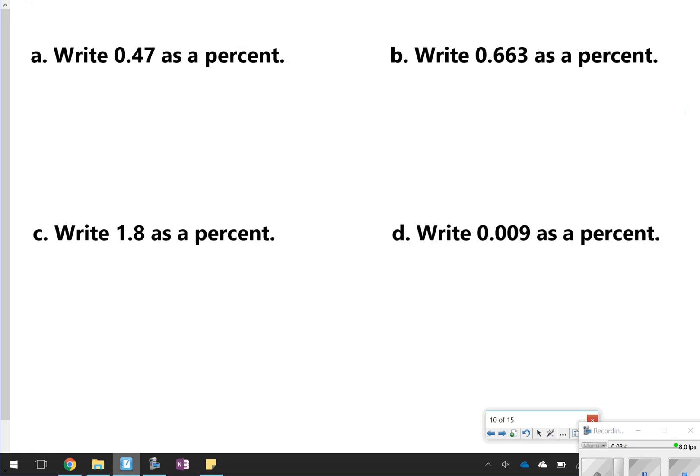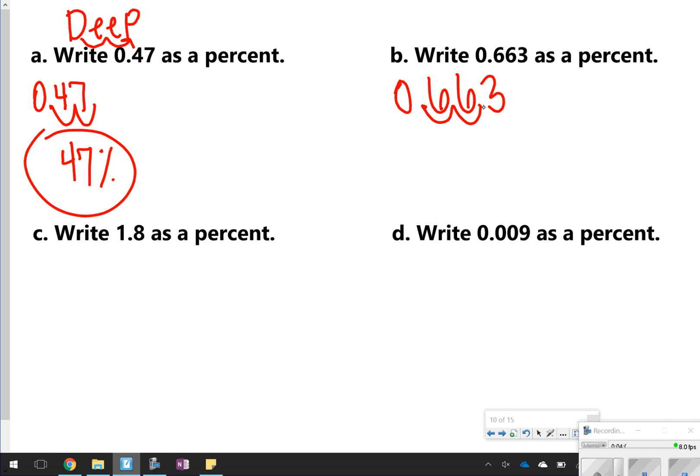So I'm going to try these for us and then you're going to try some. So we have 0.47. Remember to write decimals as percents, you can use the word DeeP or the alphabet. I have to go two places to the right to get from the letter D to the letter P. So I'm going to start with my decimal 0.47 and scoot it once, twice, and I'll get 47%. Okay? Or over here for letter B, I'd write my decimal 0.663, move my decimal two places. It's going to stop right there between the six and the three, so that means the percent will be 66.3%.